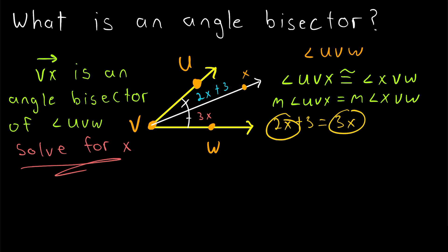Go ahead and subtract 2X from both sides, and we'll be left with 3 on the left side of the equation is equal to 3X minus 2X, which is just a single X. And so that's our answer. 3 is equal to X, or you might prefer to write X is equal to 3.